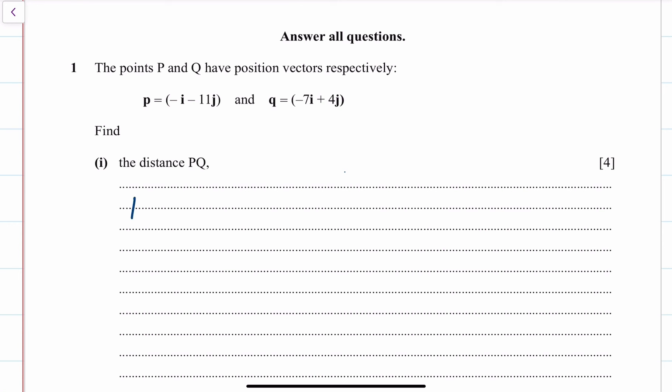The first thing I'm going to do is write these down as column vectors. It saves you so much time. We can convert it back to i's and j's form at the end. So you've got your P and your Q. That's how you can write them as column vectors.